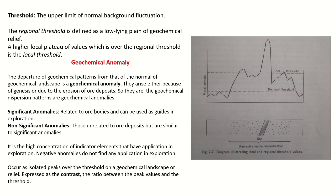There are two kinds of geochemical anomalies. Significant anomalies are directly related to ore bodies and are used as guides in exploration. Non-significant anomalies arise because of non-geologic factors such as sunlight, drainage, pH, and a number of other processes. They are similar in magnitude to significant anomalies but must be separated from them. Only the high concentration of indicator elements has application in exploration, because we are looking for an excess of concentration in the earth material.